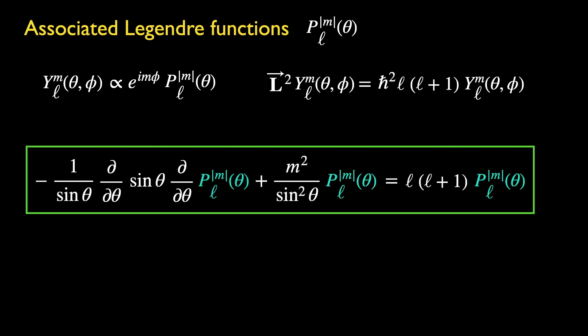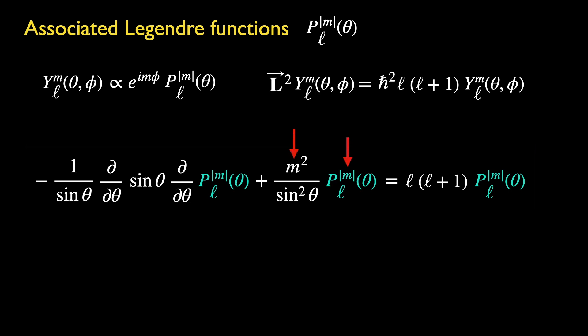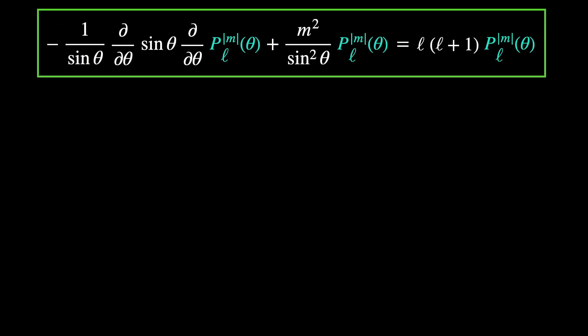Thus we are left with the differential equation for the function p. Now we can see that this function is only dependent on m through its magnitude, because only m-square appears in this equation. This equation is known as the general Legendre equation, and defines the associated Legendre functions.